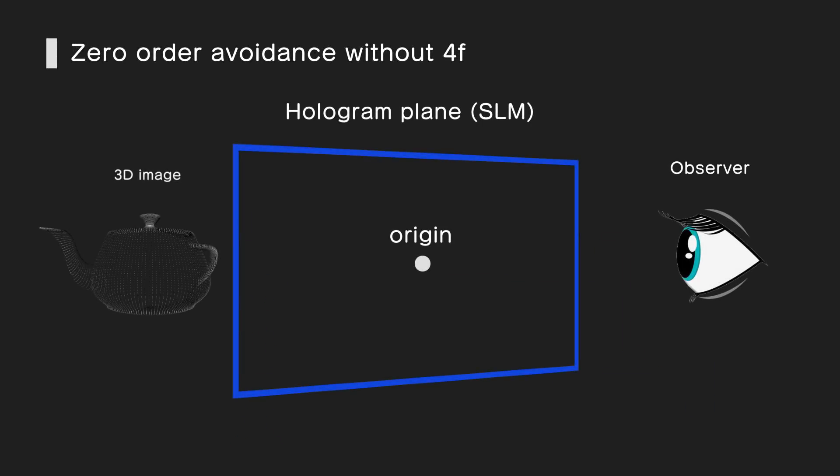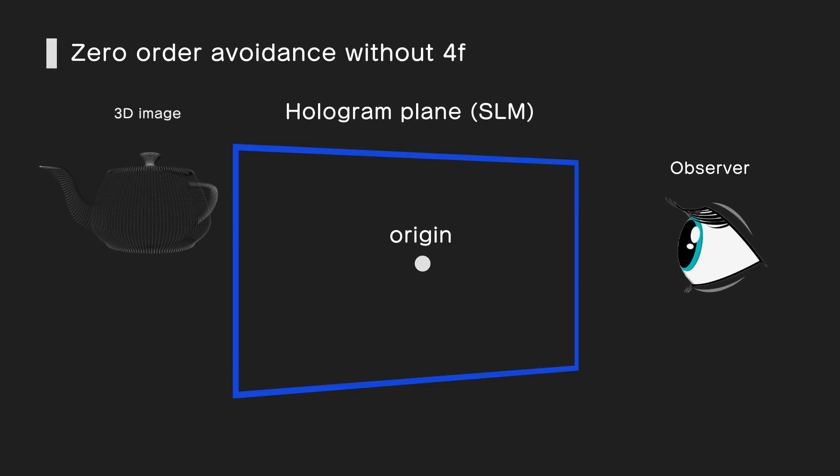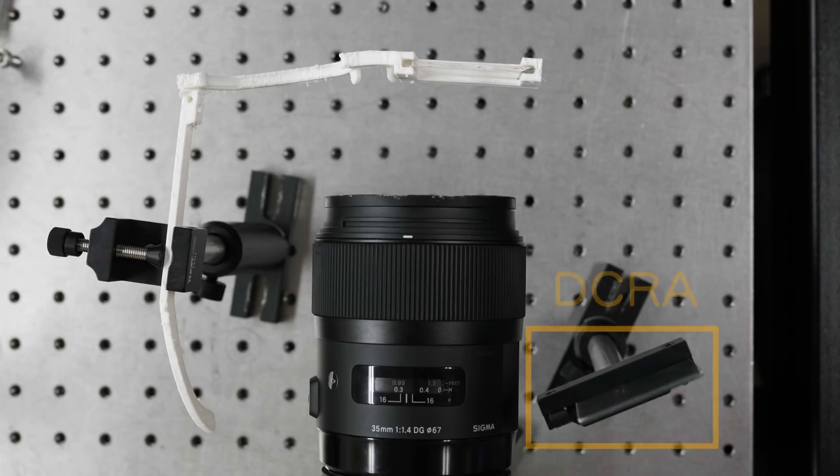We offset the image form from the origin to avoid zero-order contamination in the absence of the 4F system. We built a prototype and obtained a see-through large eye-box result of 40mm across.